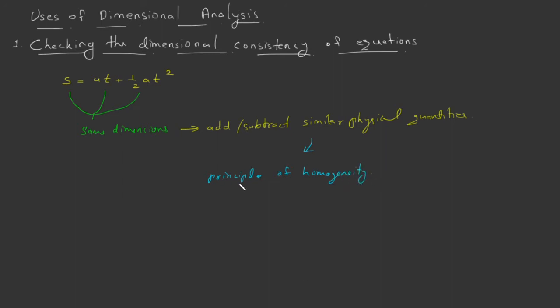So what is the principle of homogeneity? It says that we can add or subtract similar physical quantities only. This is very helpful in checking the correctness of an equation. So if the dimensions of all the terms are not the same, the equation must be wrong.